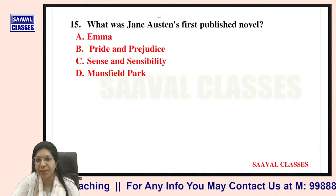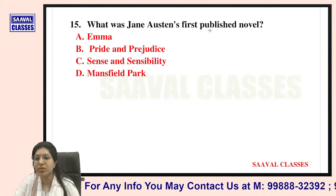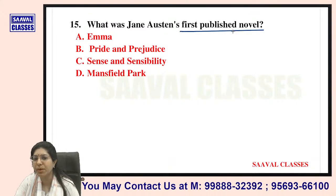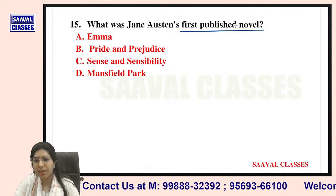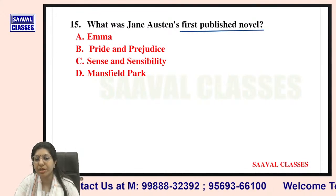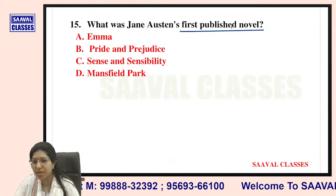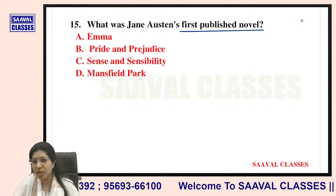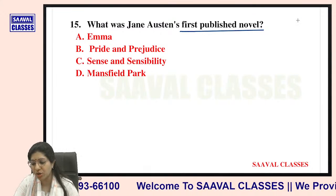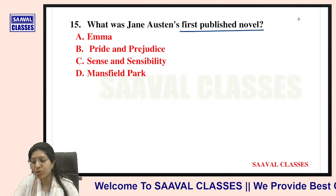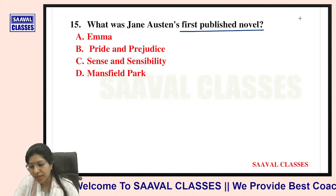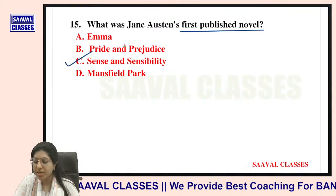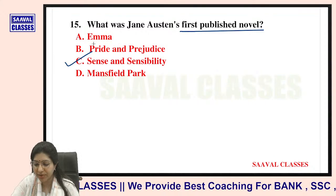Question number fifteen: What was Jane Austen's first published novel? Options are Emma, Pride and Prejudice, Sense and Sensibility, or Mansfield Park. It was written by someone else first, but the first published was Sense and Sensibility — very right.